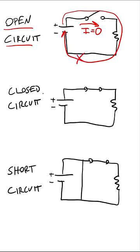A closed circuit is a circuit where we do have a complete path for current flow from positive to negative, so we are going to have some non-zero value for the current I.